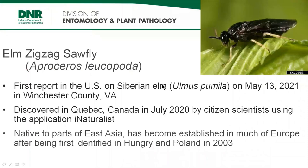The next four insects are all new to the U.S. Elm zigzag sawfly was discovered on May 13, 2021 in Virginia. This sawfly could have a large impact on native elm browsers already reeling from significant decline due to Dutch elm disease. Native to East Asia, it is a minor pest in its home range, but since it was found in Hungary and Poland in 2003, it has moved rapidly through Europe, causing localized severe defoliation in the United Kingdom. Negative impacts have been observed on native moth and butterfly species. Virginia currently has seven counties where elm zigzag sawfly has been confirmed.